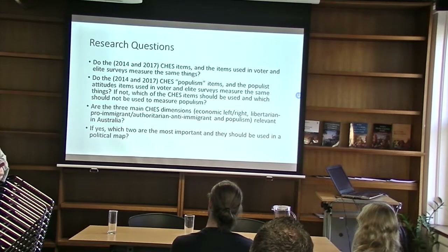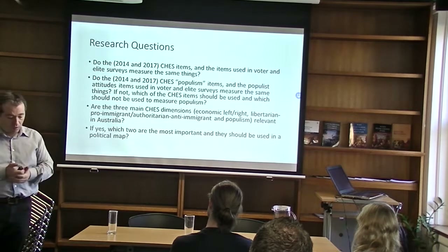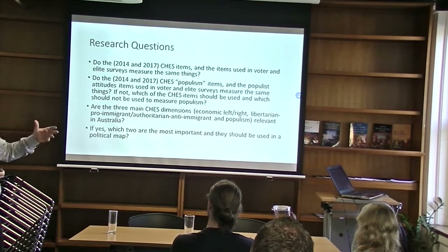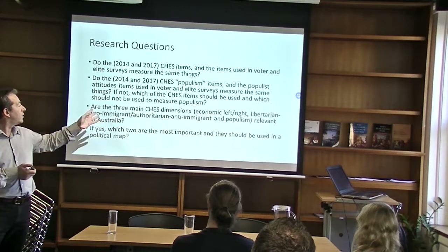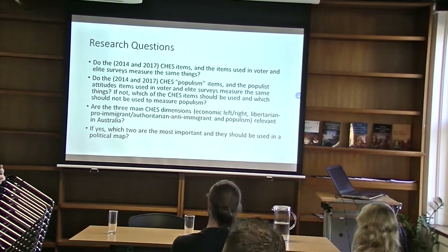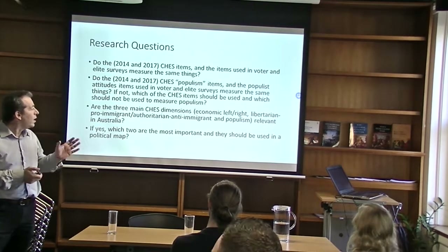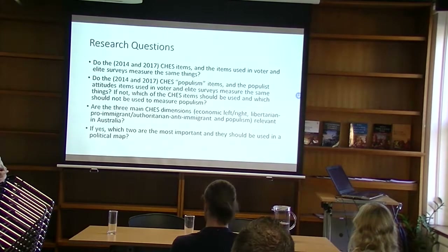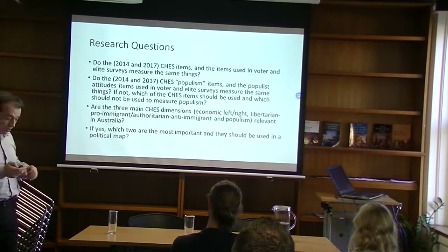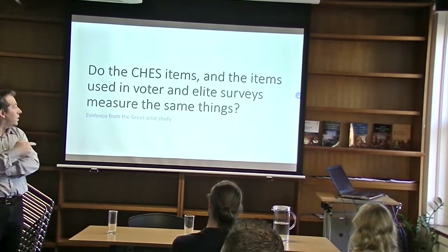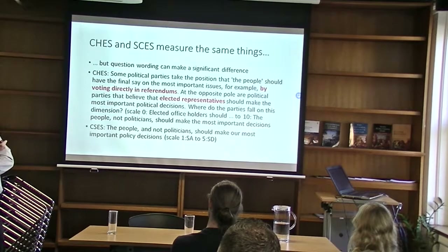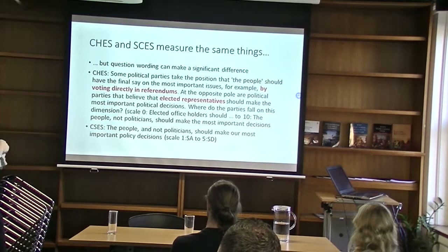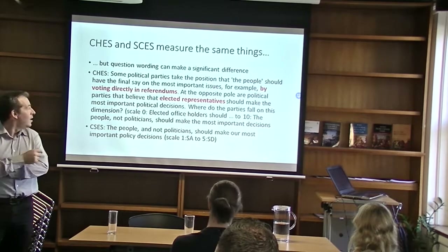Two other research questions focus on Australian political parties and Australian politics. The idea is to check if the three main Chapel Hill Expert Survey dimensions — the economic left-right, the libertarian together with pro-immigrant versus authoritarian together with anti-immigrant positions, and populism — are relevant in Australia. Based on this, we will try to see the political map of Australia with the political parties depicted on it. To answer the first research questions about whether we measure similar things, the general answer is yes. You can see evidence in the paper that Chapel Hill and CSCS measure the same things.